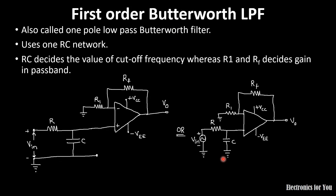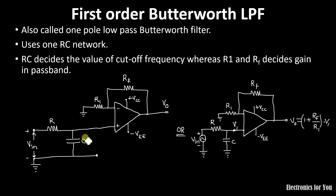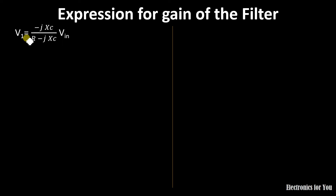Now let us calculate the expression for the low pass filter. The output voltage for a non-inverting amplifier is given by (1 + RF/R1) multiplied by the input voltage V1. We have to calculate V1, which is the voltage measured across the capacitor, and it is given by (−jXC) / (R − jXC), where XC is the capacitive reactance, multiplied by the input voltage Vin.